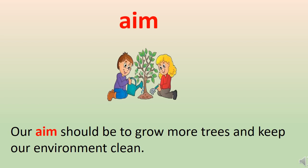The next word is 'aim.' The meaning of aim is when we want to achieve something in the future — we have to start working from today. We should always aim high to achieve our target. Let's use this in a sentence: 'Our aim should be to grow more trees and keep our environment clean.' In the picture, you can see children planting trees today so that in future our environment becomes clean.